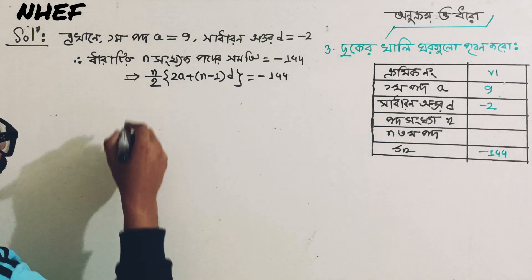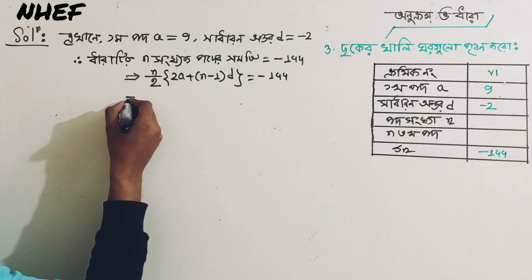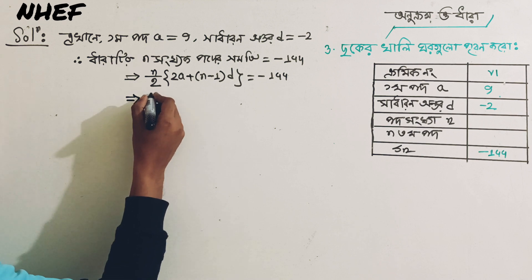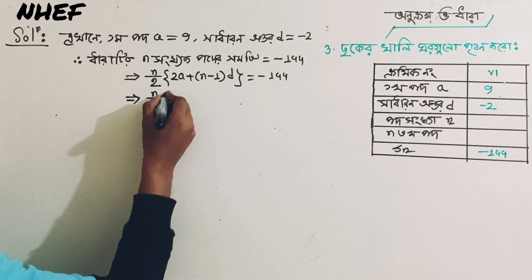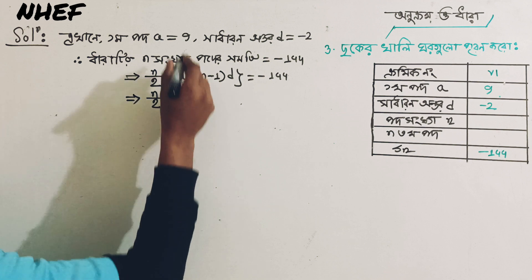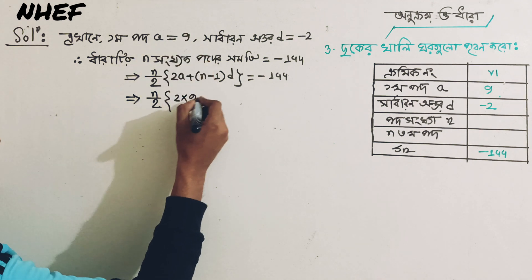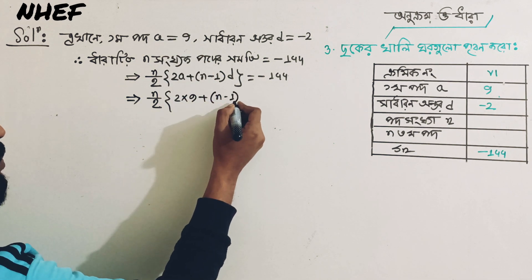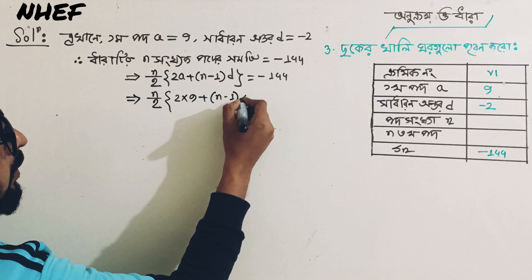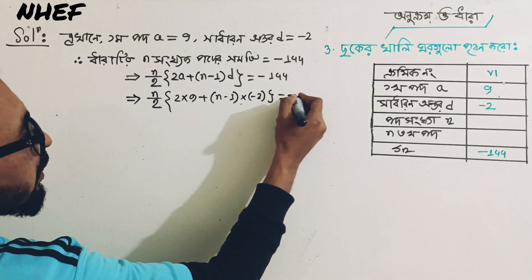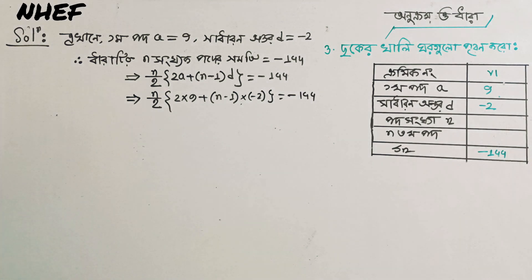So we will see that n minus 1 is very easy to find. Right? So: n divided by 2, second bracket, 2 plus (n minus 1) into d — that is, into minus 2 — is equal to minus 1, 12. Right? Minus 1, 12.